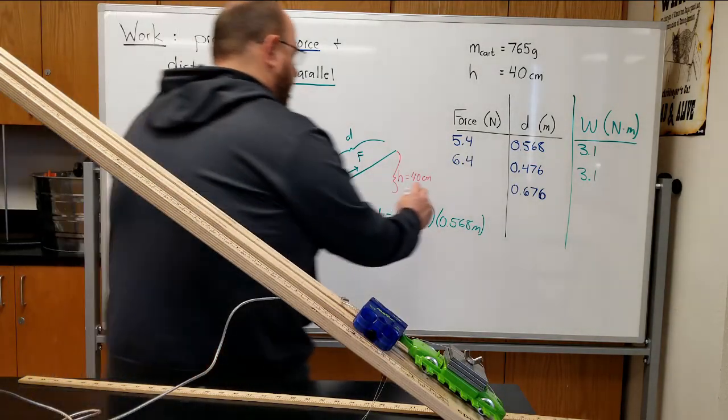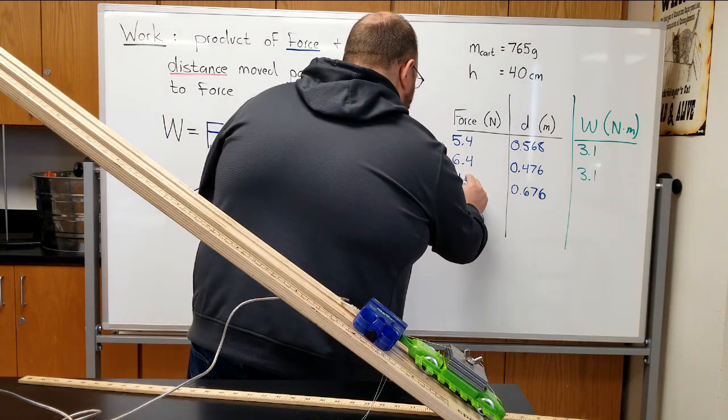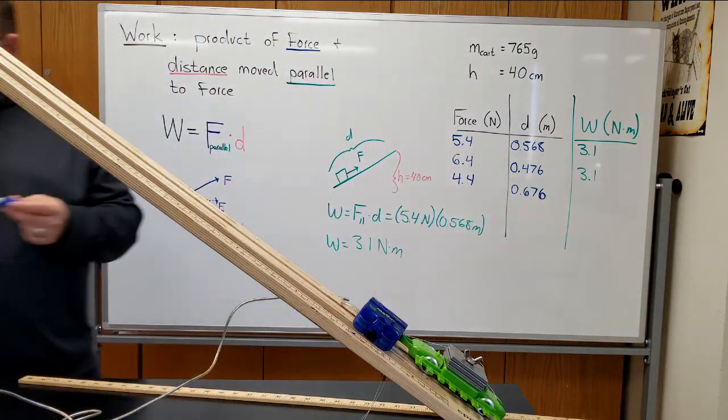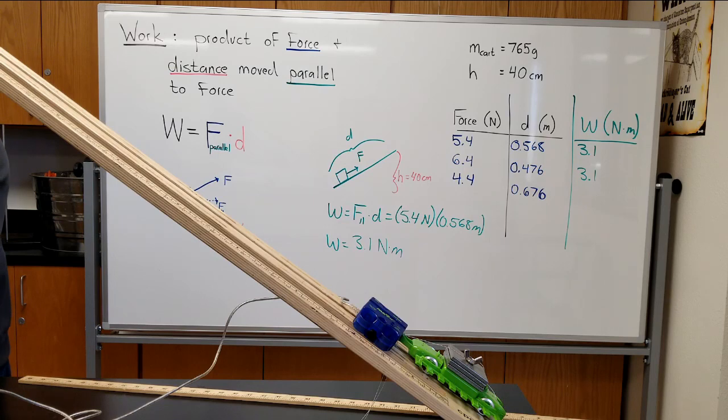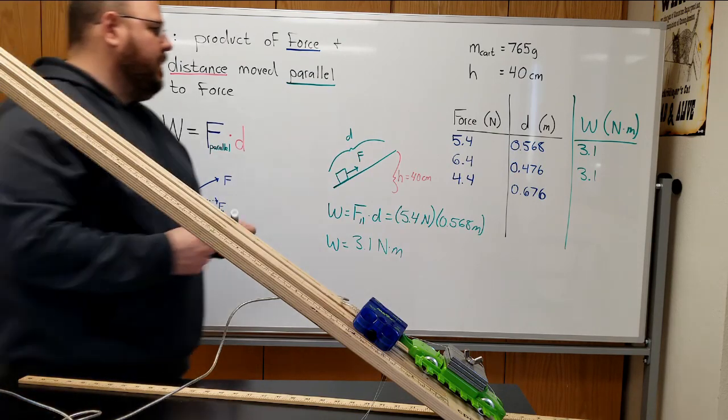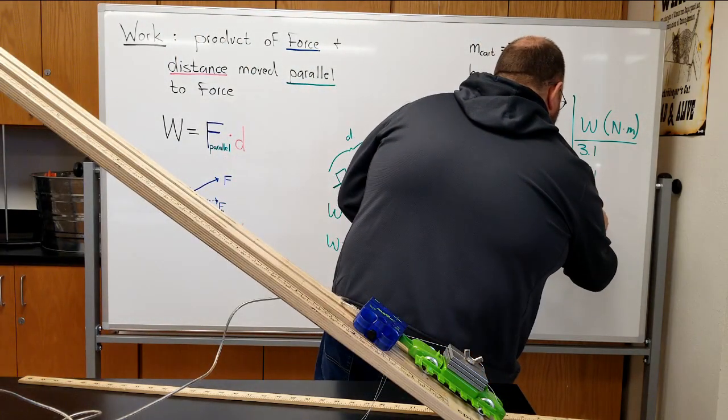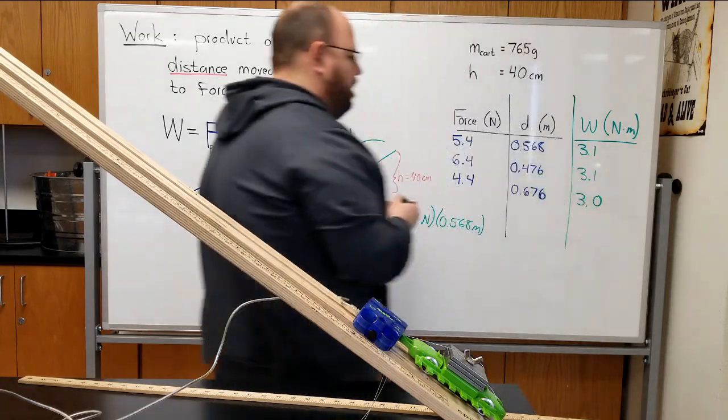4.4 newtons. I promise I didn't plan it to be ending at 4 each time. 0.676 times 4.4 gives me 3.0. So 3.0 in that case.